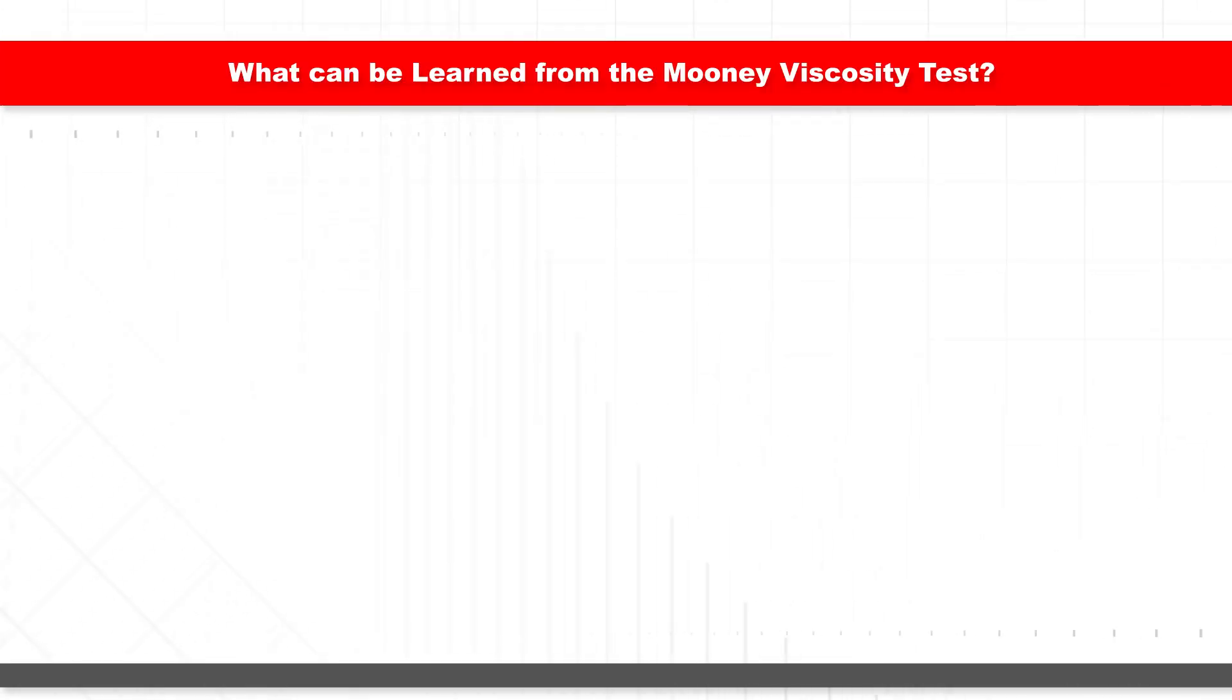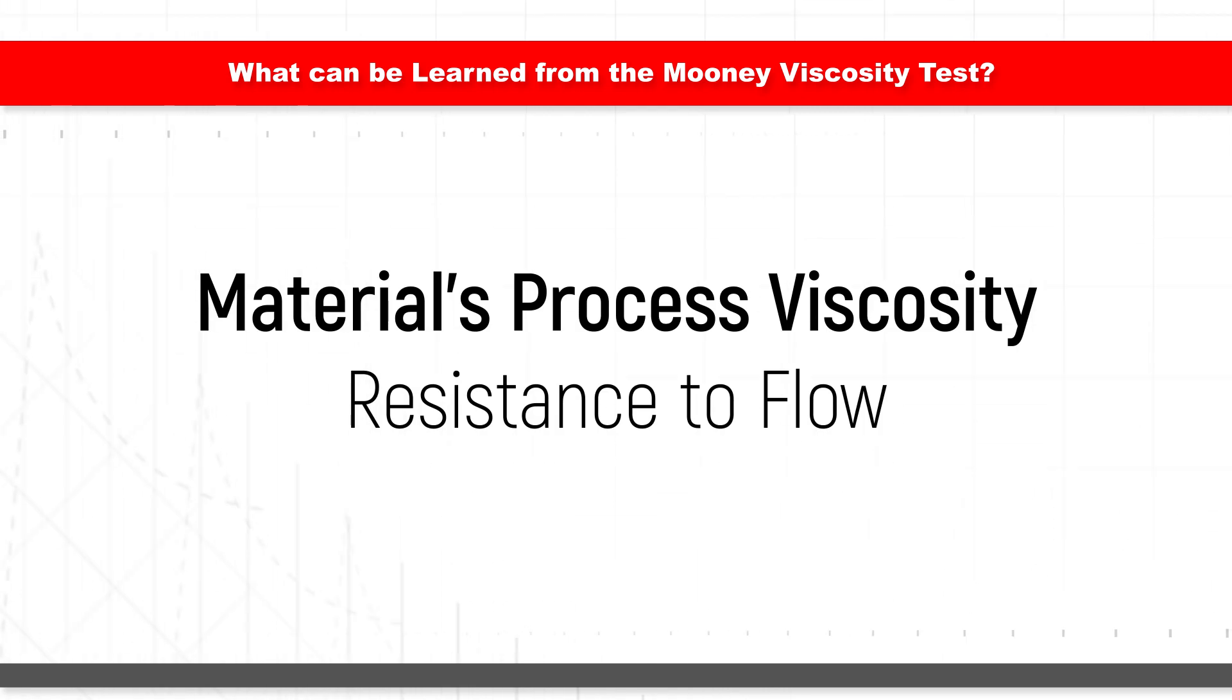So what can be learned from this test? First and most important, we can learn whether a material meets specifications for production. More specifically, we learn about the process viscosity of a material from the Mooney test or its resistance to flow.